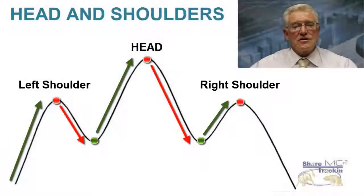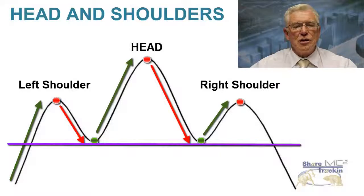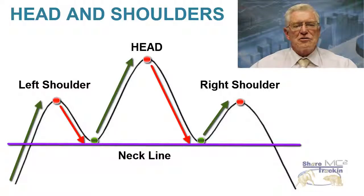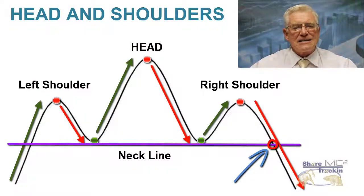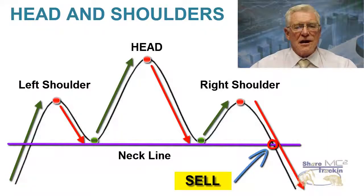If you draw a horizontal line connecting the two lows which follow the right shoulder and the head you will have the neckline. After the right shoulder is complete the share price normally falls back again to the point where it breaks down through the neckline and gives a clear sell signal. After that a strong bear trend normally begins. This is how a head and shoulders formation works.